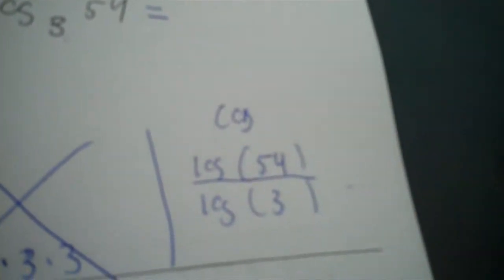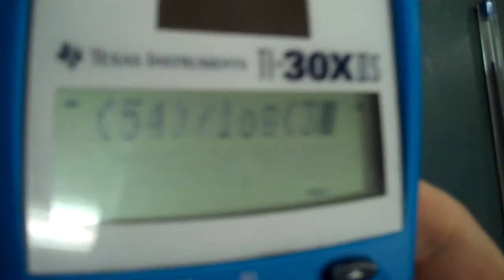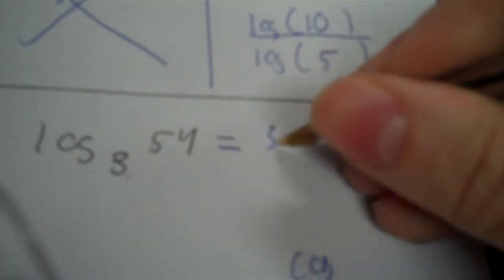So we go base of 3, and the product 54. So I take the log of 54, divided by the log of 3. That's why they invented logs. 3.63.